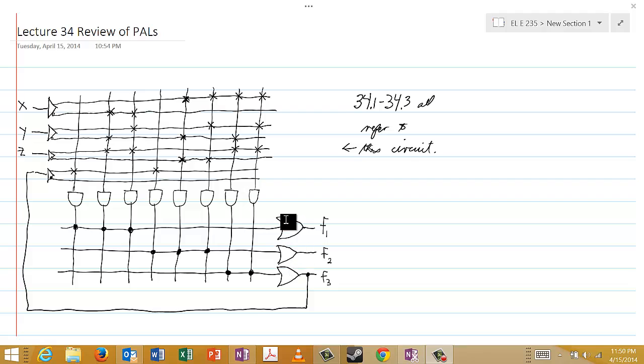And so we have OR gates here. F1, F2, and F3 are the outputs of these OR gates.